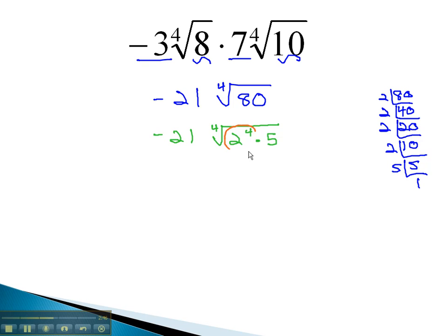Notice we can divide the exponent by the index. 4 divided by 4 tells us 1 of this number's coming out, or 1, 2 comes out of the radical. Multiplying this by the negative 21, our final answer is negative 42 times the 4th root of 5.